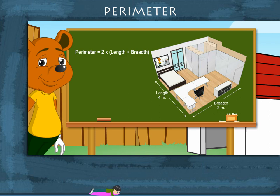So, the perimeter of the study room is equal to 2 into 4 plus 2 meter, which equals 2 into 6 meter, which equals 12 meter. Good work, Toby!